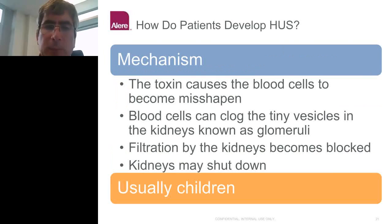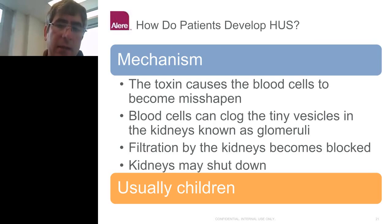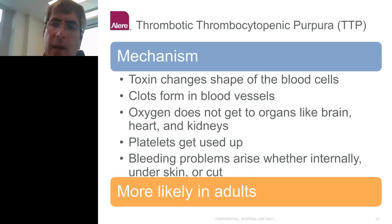The mechanism of hemolytic uremic syndrome involves the Shiga toxin causing blood cells to misshapen, clogging the tiny vessels in the kidneys. Once filtration becomes blocked, the kidneys start shutting down. This is the biggest problem with E. coli O157 — particularly in children. Some people do recover, but some suffer permanent kidney damage.